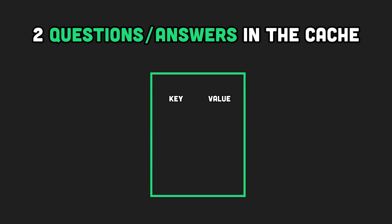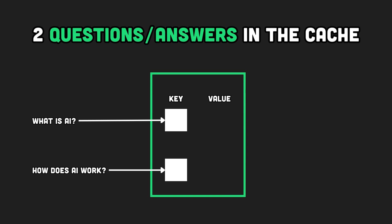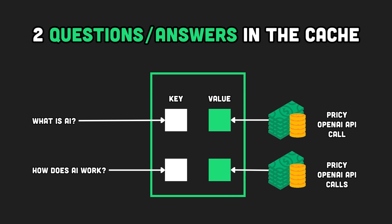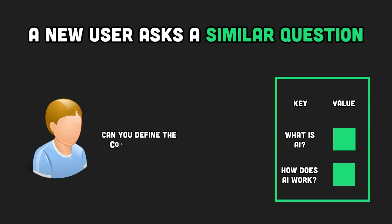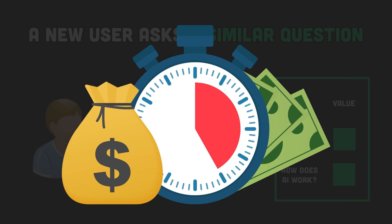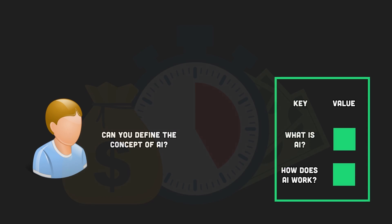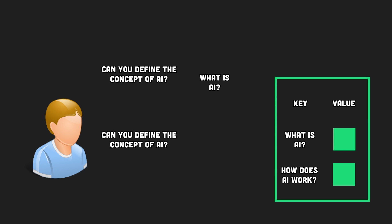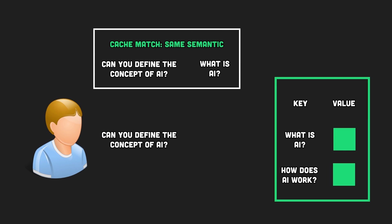Imagine the following scenario. Suppose two questions — 'What is AI?' and 'How does AI work?' — have been asked and answered by GPT-4. Those questions, along with their answers, are now stored in our cache. Fast forward to a new user asking, 'Can you define the concept of AI?' Normally this would require another round of querying GPT-4, costing time and money. But thanks to our cache, it recognizes that the question closely matches 'What is AI?' and promptly returns the stored answer, saving you both time and expenses.